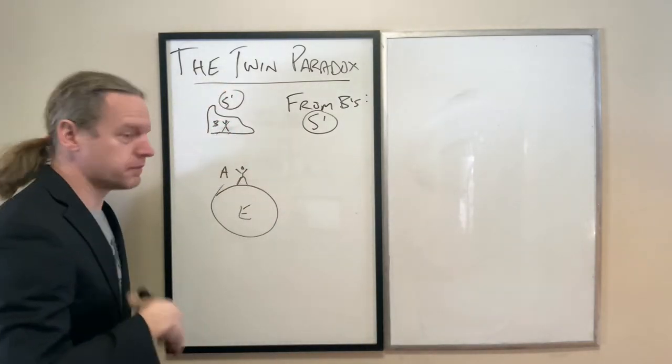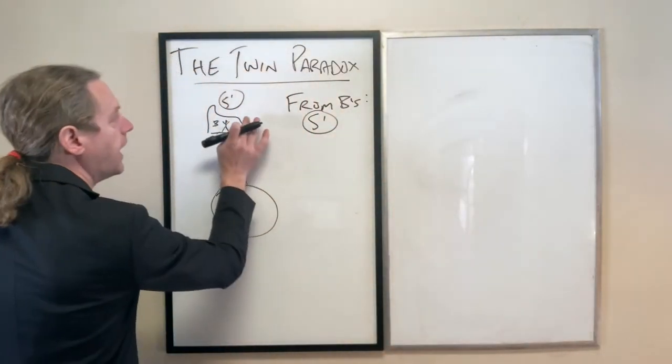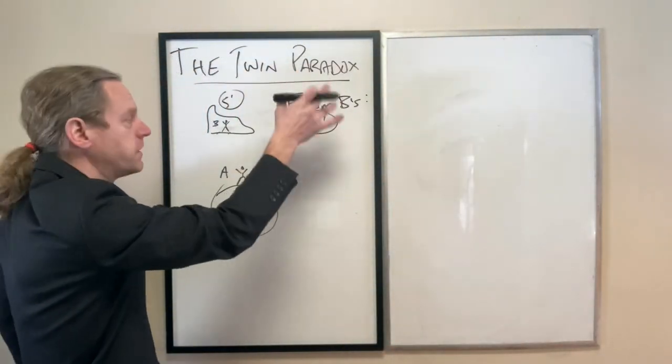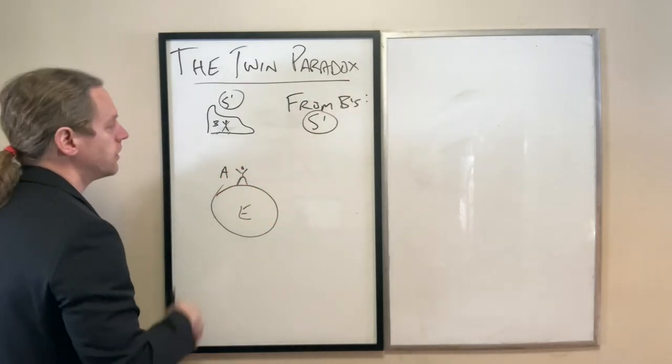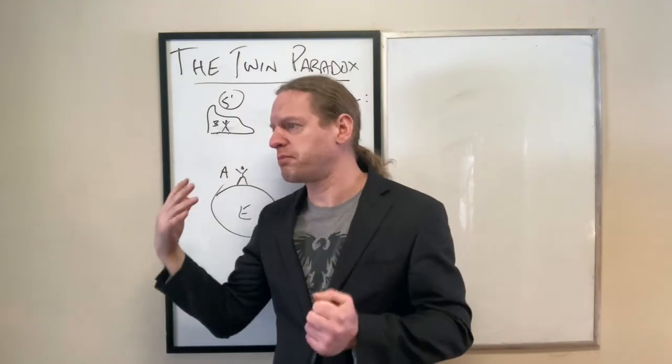So let's view it from B. From B's reference frame or S prime. Now, according to them, remember, we shipped them out into a spaceship, and they're going 90% of the speed of light relative to Earth. Now, if they were to look out, well, first of all, let's, even before they do that,